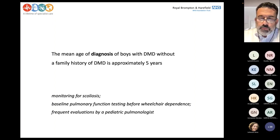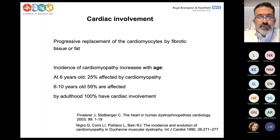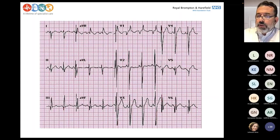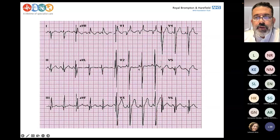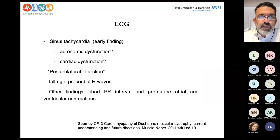The cardiac involvement is very significant. By the age of 10, 60% of patients will be affected by cardiomyopathy, and by the age of 20, 100% of patients will have cardiac involvement. This is a very typical ECG for Duchenne muscular dystrophy. One feature is the tall R waves in the anterior precordial leads, and the other is the Q waves in the inferolateral leads, which mimic a myocardial infarction. Another comment is that the ECG in Duchenne muscular dystrophy is usually tachycardic.